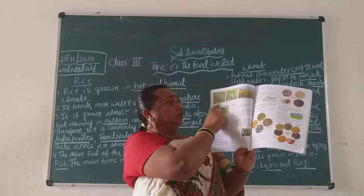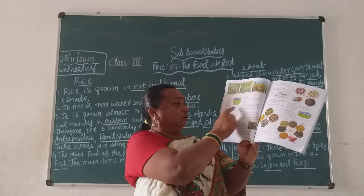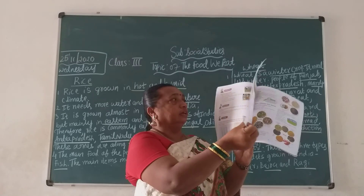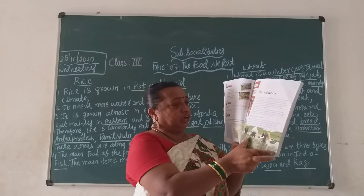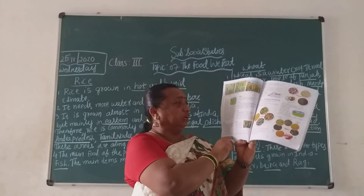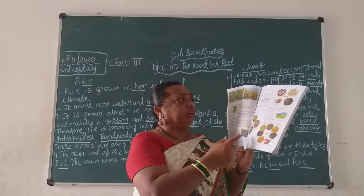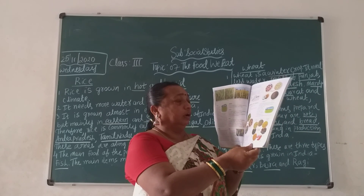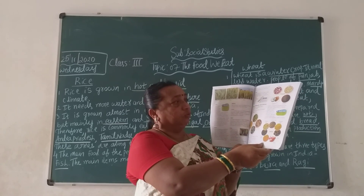See children — wheat, Jowar, Bajra. Take out your reader and read, children. Read page number 49 and page number 50. Next class I will do another topic, children.